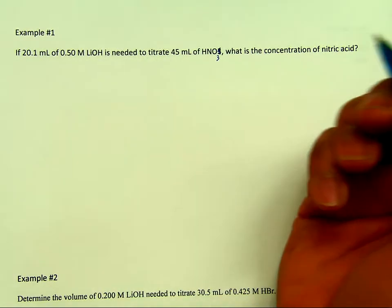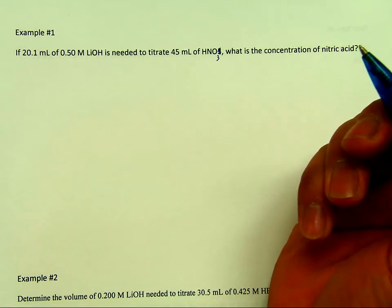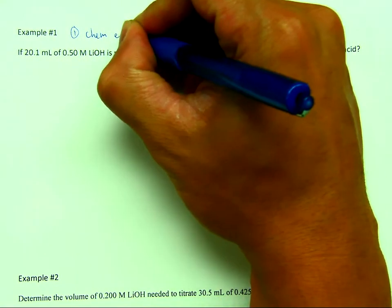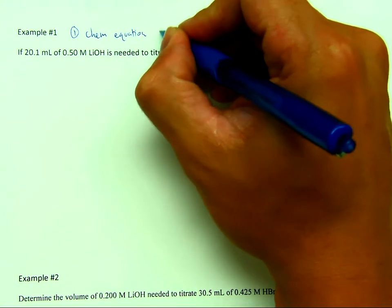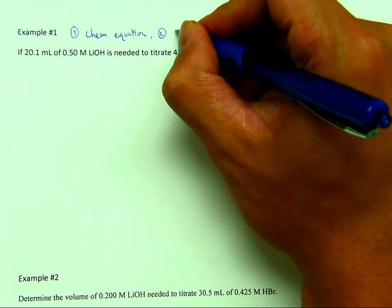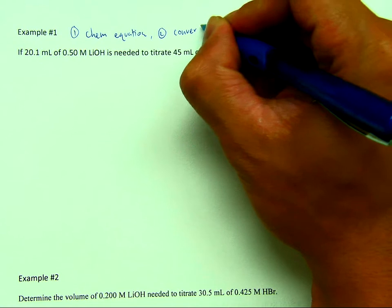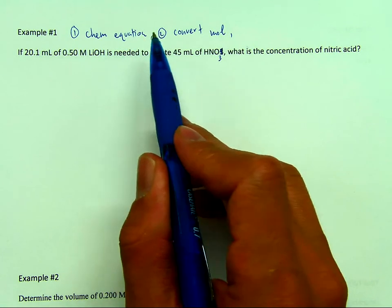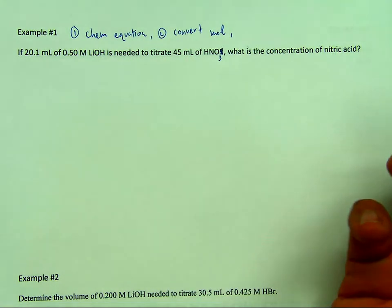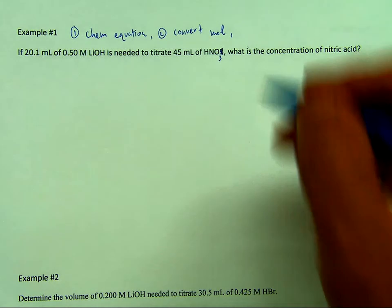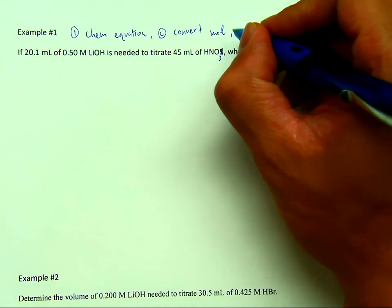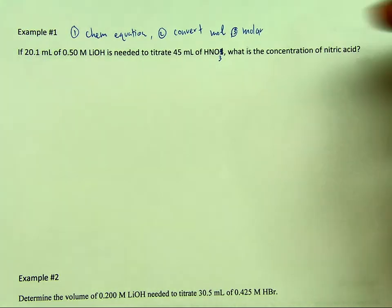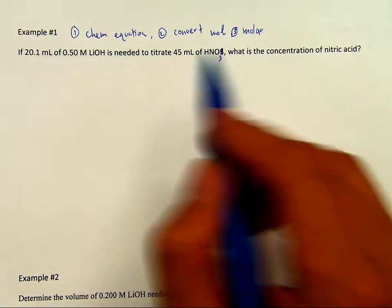The very first step to working out these problems is to write a chemical equation. Step two would be to convert to moles. Now, once you have moles and the balanced chemical equation, then you can convert it to whatever measurement or unit you need. For this problem, we're going to use the molar ratio to convert from the base to the acid.